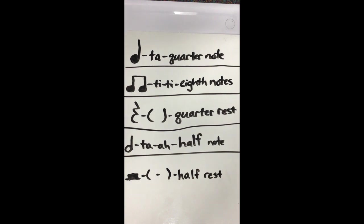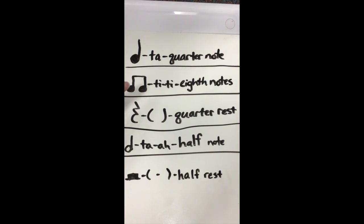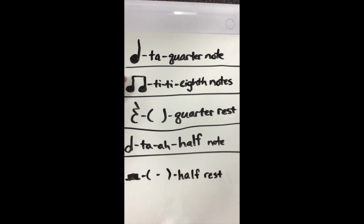Next you see what looks like two quarter notes together, but they are attached at the top with a beam — those are our eighth notes. Notice there's an 's' because there's two of them together attached, and we say the syllables 'ti-ti.' Because there are two of them we need two sounds, so they also get one beat each. The first sound goes with the beat and the second is on the upbeat.